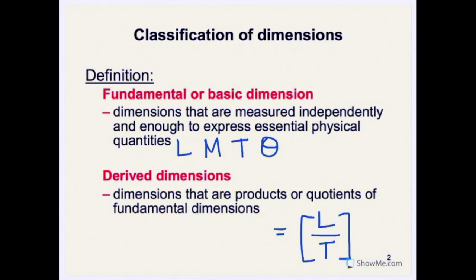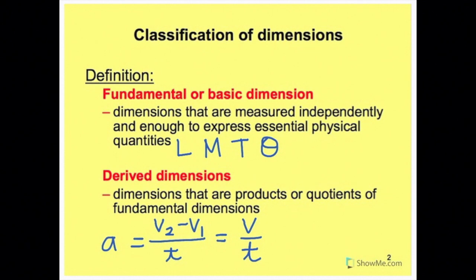Another example is acceleration. It is also a derived dimension. Acceleration is the difference in velocity over time. Looking at the qualitative nature of the dimension, instead of looking at the difference of the two velocities, let's just take it as one velocity. So V is length over time divided by time. If we simplify this, it becomes L over T squared, which is another combination of fundamental dimensions.